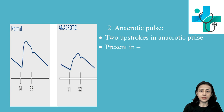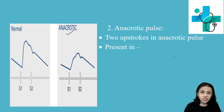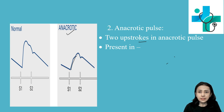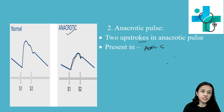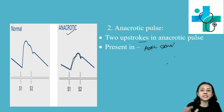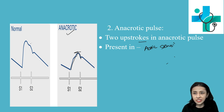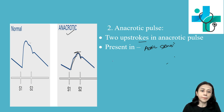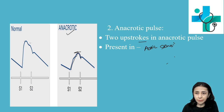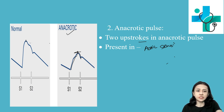Next is anacrotic pulse. In anacrotic pulse you find two upstrokes present in the upstroke limb. This is present in patients with aortic stenosis. Because of the stenosis there is slow ejection of blood from the left ventricle, so the pulse has small volume. This is also known as slow rising pulse, and the peak is also delayed compared to the normal pulse.